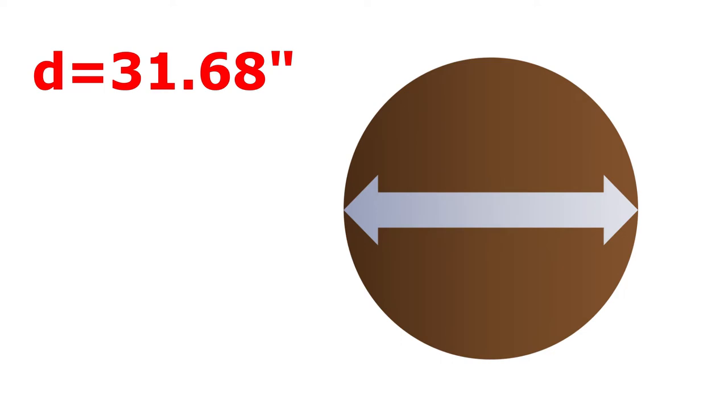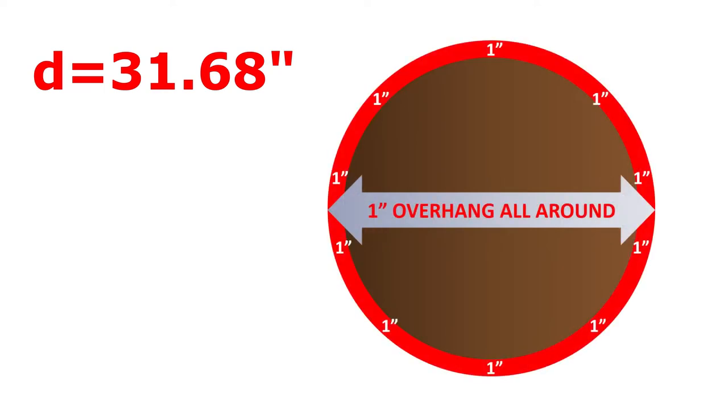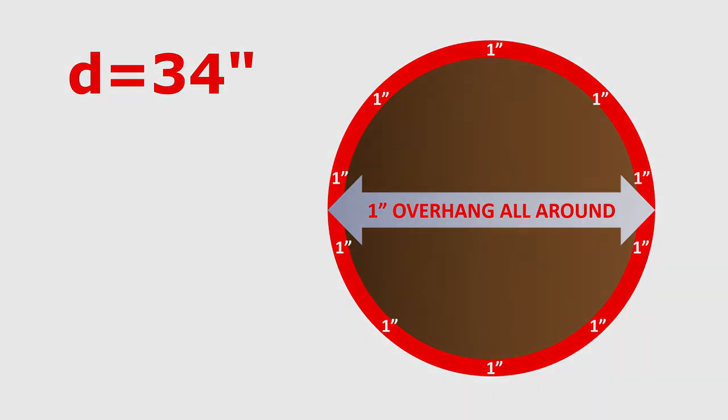But since I want my lid to have at least an inch of overhang all around the tank, I add two inches and round up. The result is 34 inches. This is the diameter of the circle I need to draw and cut.